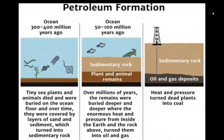Here is the story about petroleum formation. In the ocean, 300 to 400 million years ago, tiny sea plants and animals died and were buried on the ocean floor. Over time they were covered by layers of sand and sediment, which turned into sedimentary rock. Then 50 to 100 million years ago, over millions of years, the remains were buried deeper and deeper, where the enormous heat and pressure from inside the earth and the rock above turned them into oil and gas. If we drill that sedimentary rock, inside the rock there are oil and gas deposits.